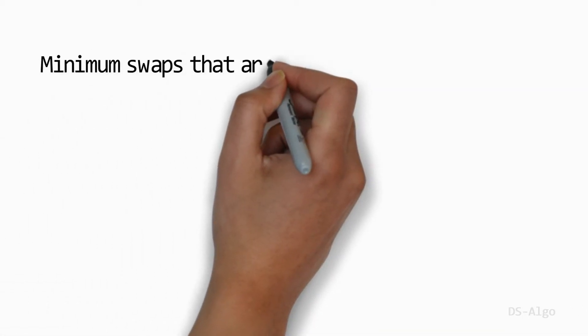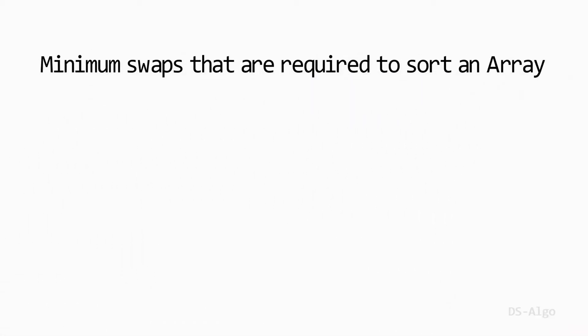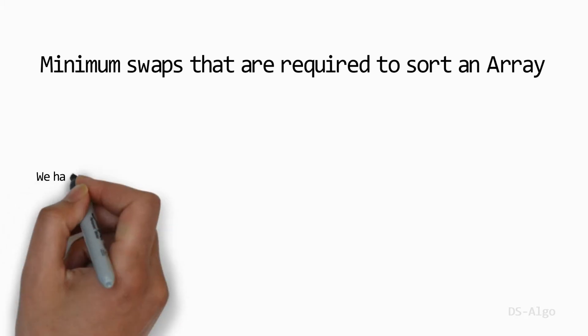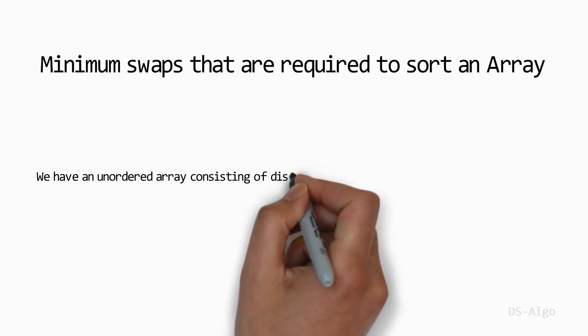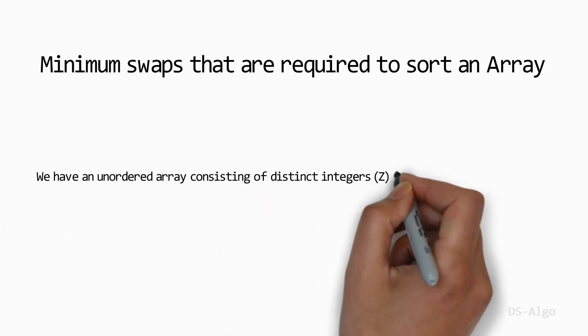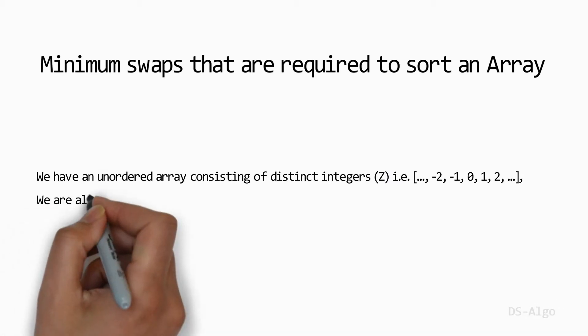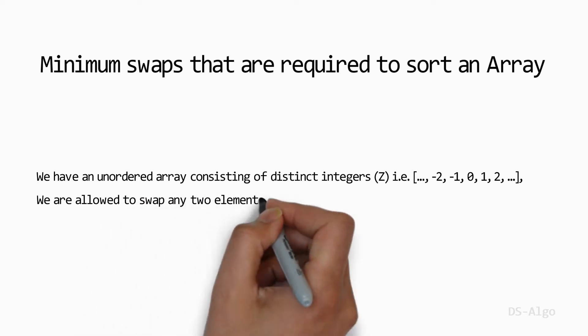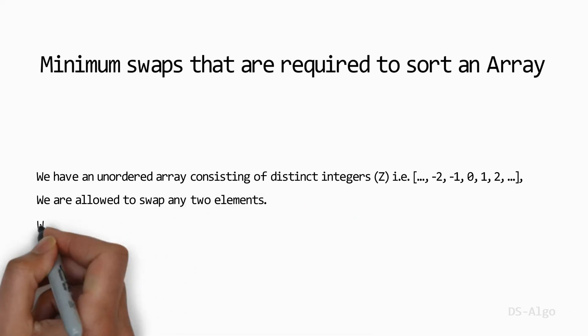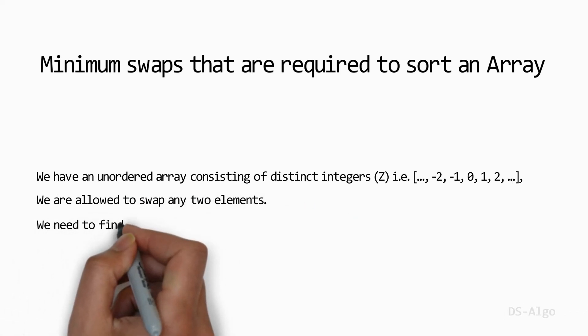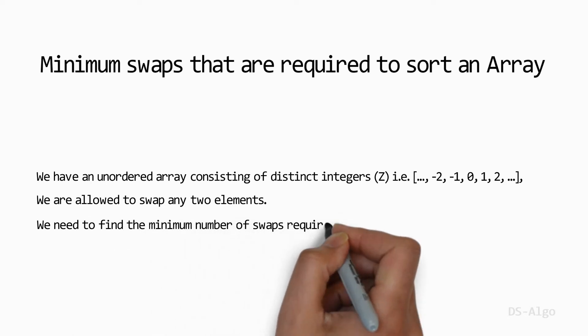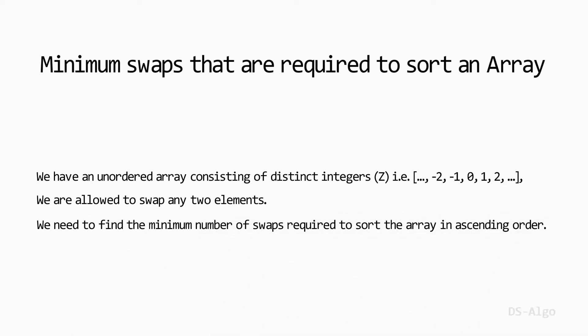In this video, I am going to discuss the solution to find the minimum swaps that are required to sort an array. We have an unordered array consisting of distinct integers, i.e., a subset of integers. We are allowed to swap any two elements. We need to find the minimum number of swaps required to sort an array in ascending order.